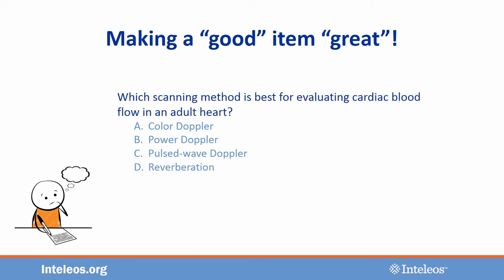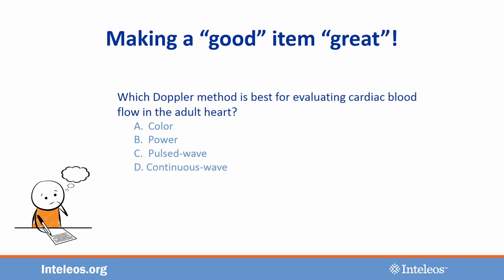Upon reading the stem, you can see the question asks which scanning method. Unlike the others, reverberation is not a scanning method and thus a poor distractor. For a more plausible option, choose another scanning method — in this case, another type of Doppler, such as continuous wave Doppler. Since Doppler is repeated in each of the responses, we can eliminate the extra wording by editing the stem to include the word Doppler. Asking 'which Doppler method is best for evaluating cardiac blood flow in the adult heart?' allows for more streamlined answer choices. The edited question now follows the ARDMS and APCA style guide.